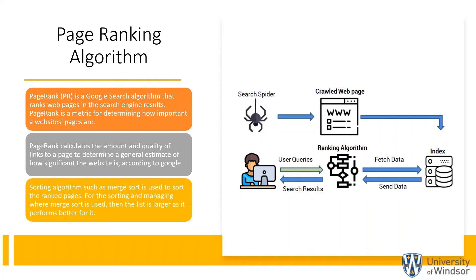Thank you Survir for the explanation of spell checker. My name is Soham Shah and I will explain the page ranking algorithm and project flow. Page ranking is a Google search algorithm that ranks web pages in search engine results. Page rank is a metric for determining how important a website's pages are. Page rank calculates the amount and quality of links to a page to estimate how significant the website is. A sorting algorithm such as merge sort is used to sort the ranked pages. We used merge sort in our project because when the results list is large, it performs better. The page ranking algorithm fetches data and sends it from the indexing method to the user in the form of results.